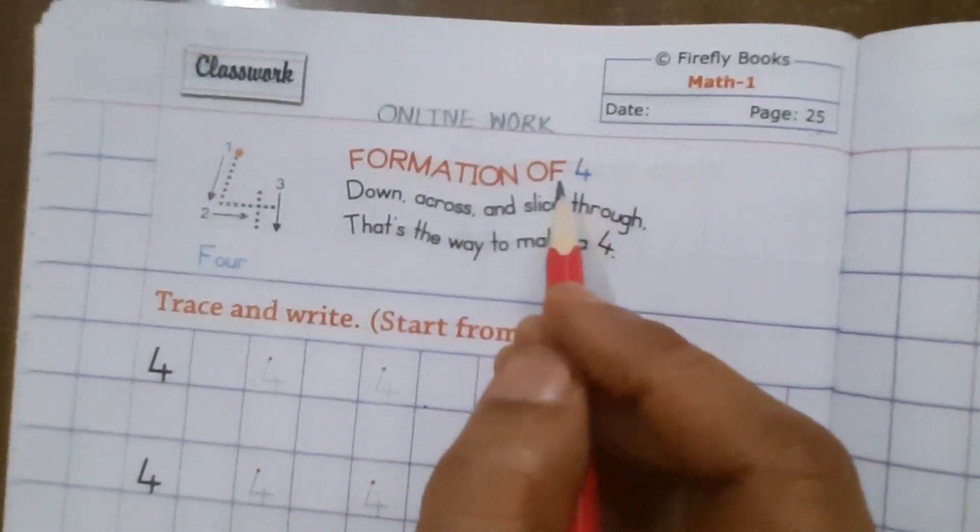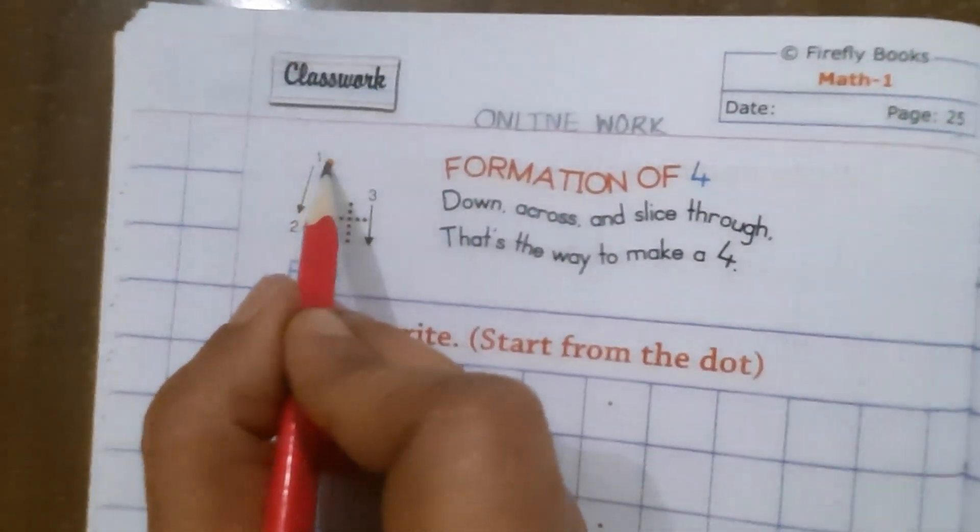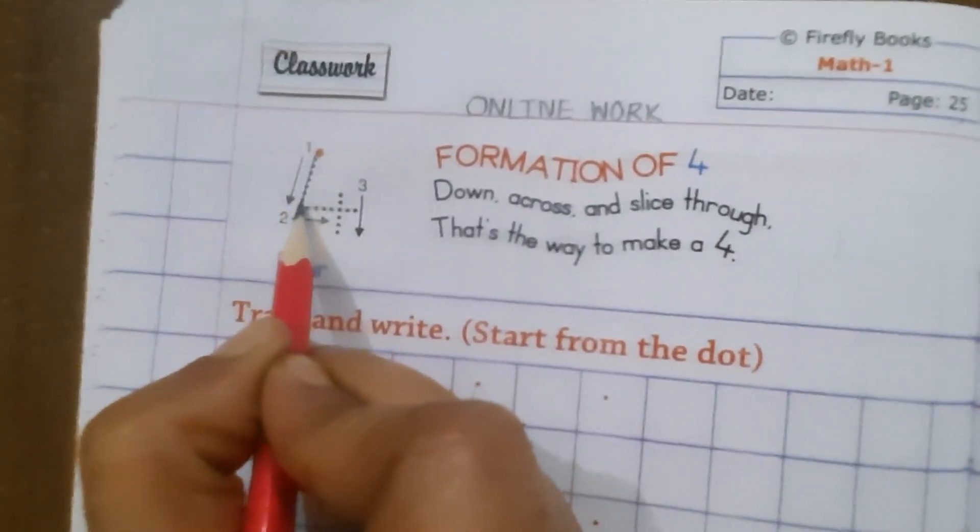Now we write number 4. We start from dots. Make a slanting line.